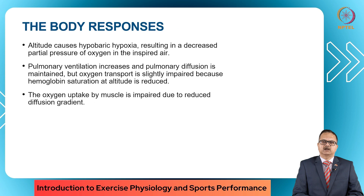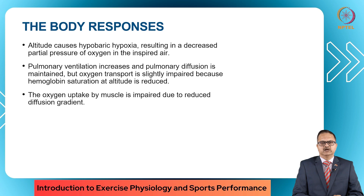Altitude causes hypobaric hypoxia, resulting in a decreased partial pressure of oxygen in the inspired air. Pulmonary ventilation will increase; pulmonary diffusion is maintained but oxygen saturation is slightly impaired. Oxygen transport is also impaired and hemoglobin saturation is reduced. Consequently, the oxygen uptake by the muscle is impaired due to the reduced diffusion gradient.